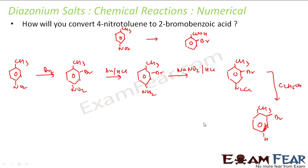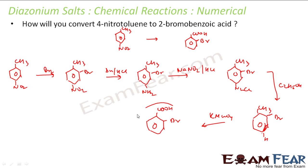Now I can just oxidize it — I can take KMnO4 and oxidize this. The CH3 will become COOH, and the bromine is retained. This is my product. So I could easily convert 4-nitrotoluene to 2-bromobenzoic acid.